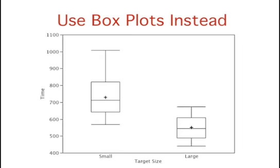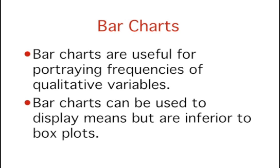Although bar charts can display means, we do not recommend them for this purpose. Box plots should be used instead, since they provide more information than bar charts without taking up more space. For example, a box plot of the mouse movement data is shown here. This graph reveals more about the distribution of movement times than does the bar chart just shown. To repeat, although it is common to use bar charts to display statistics such as means, it is better to use box plots, since box plots convey more information in the same amount of space.